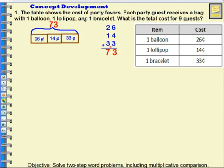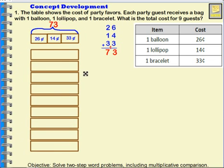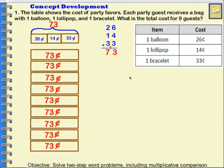But it needs to know what is the total cost for nine guests. That means I have this tape diagram and the whole thing is 73, but for nine guests I would actually have to have nine individual rectangles. Each of those rectangles is worth 73 cents, so I need to multiply seventy-three nine times.